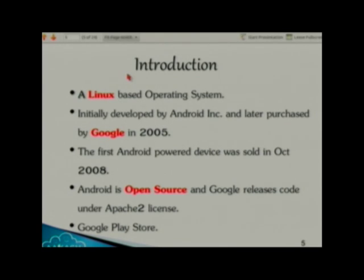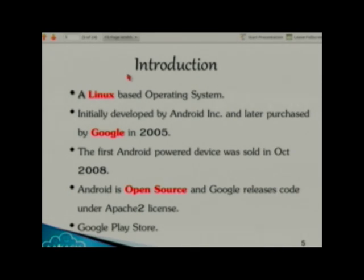Android is a Linux-based operating system specially designed for touchscreen devices like smartphones, tablets, and so on. Initially it was developed by Android Inc and later purchased by Google in 2005. Google started working on Android in 2005 and after three years came up with the first Android-powered device, in 2008. Android is open source — this is the reason why Android is so popular.